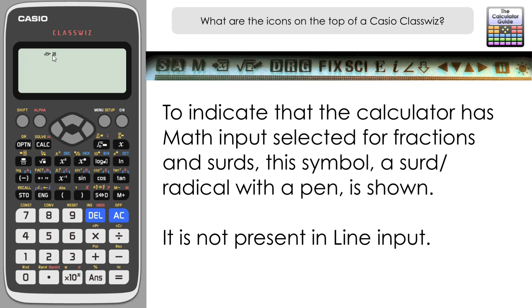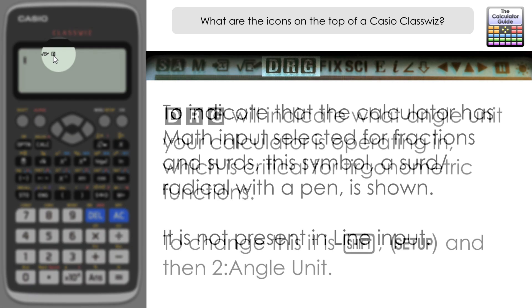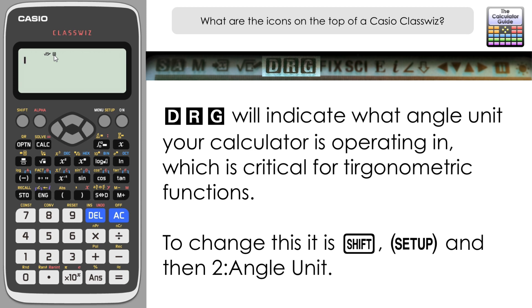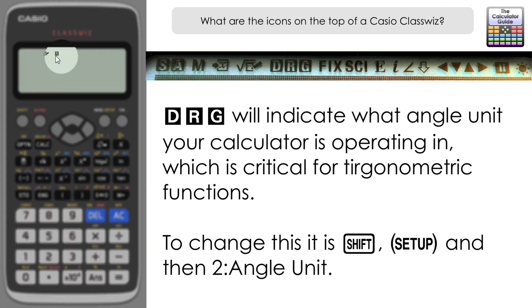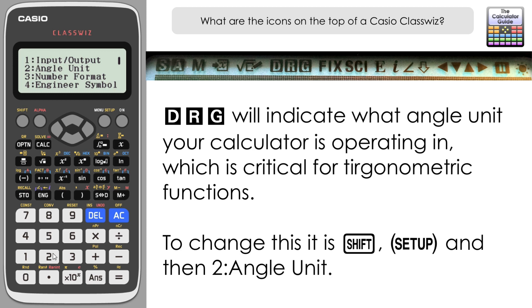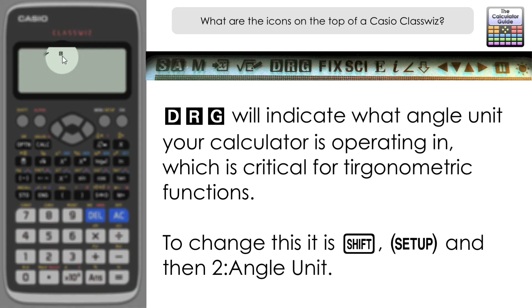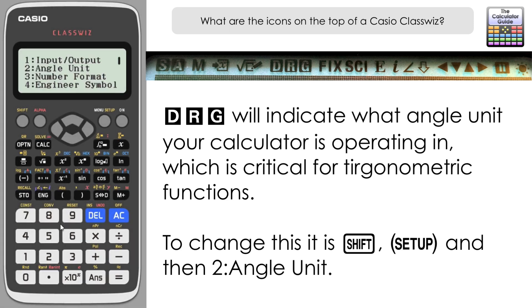Next to that we have a D — in fact we've got D, R, and G. This refers to the angle unit the ClassWiz is currently operating in. To change it: Shift, Setup, then 2 for angle unit. You can see three choices — degree, radian, and gradient. Changing to option 2 changes the D to R, and option 3 changes it to G for gradients. Let's change it back to degrees.